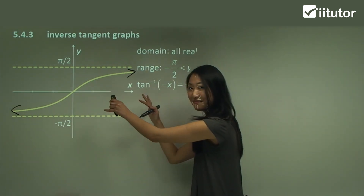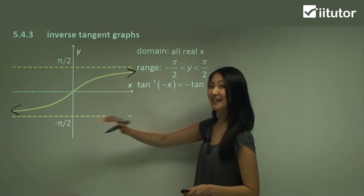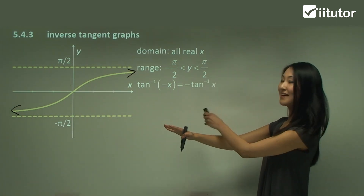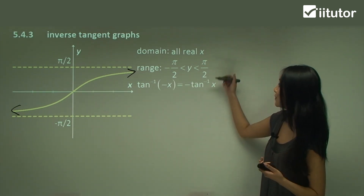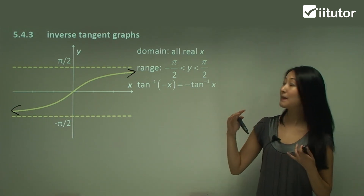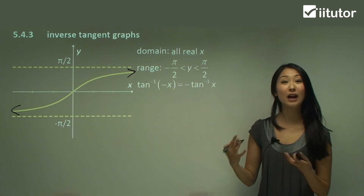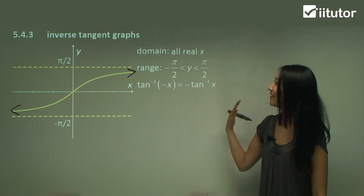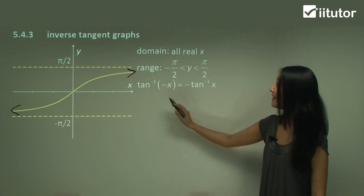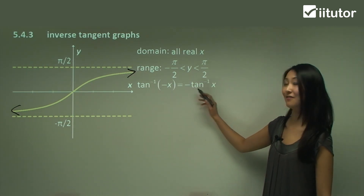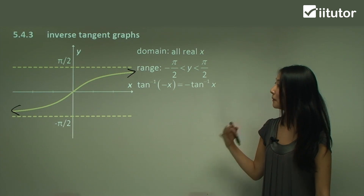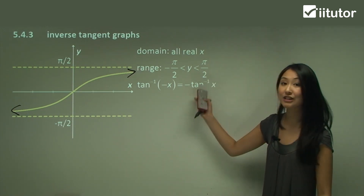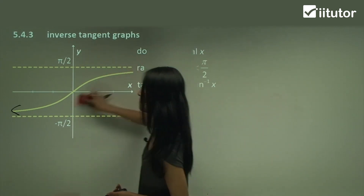Remember the basic shape and the asymptotes at pi on 2 and negative pi on 2, which define where the range ends. The domain is all real x, so it can be anything. The range is between negative pi on 2 and pi on 2, but be careful — it's strictly greater than and less than with no equal signs, because there are asymptotes there. Draw arrows on the ends of the curve to show the domain keeps going, and use strict inequalities for the range.